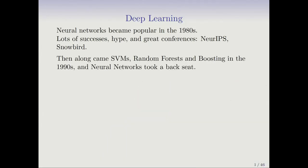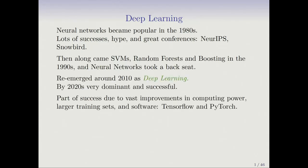Then along came support vector machines, Random Forest and Boosting, which you've learned about in this course. And neural networks took a bit of a backseat. They re-emerged around 2010 with a new name, Deep Learning. And by the 2020s, they became very dominant and successful. They're used all over the place now.